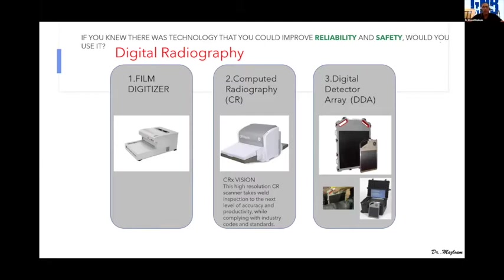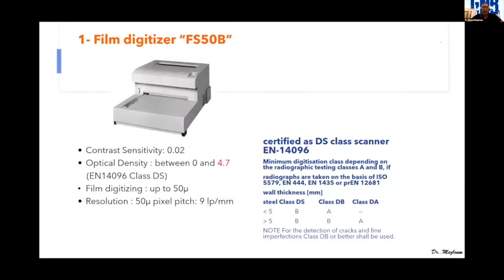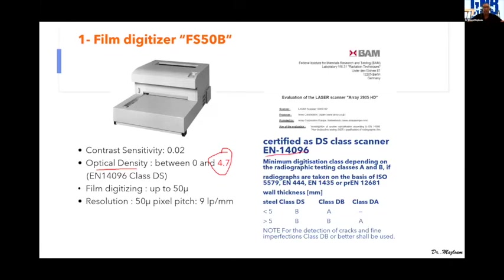The first section is film digitizer — my colleagues Dr. Sherpa, Pavel, and Michelle already covered this in detail in previous presentations. One important thing to highlight: 4.7 is the highest optical density we can achieve, according to EN 14096. My colleague Dr. Sherpa gave a great presentation on classifying films by class — DS, DB, or DA. This optical density of 4.67 is approved by BAM.